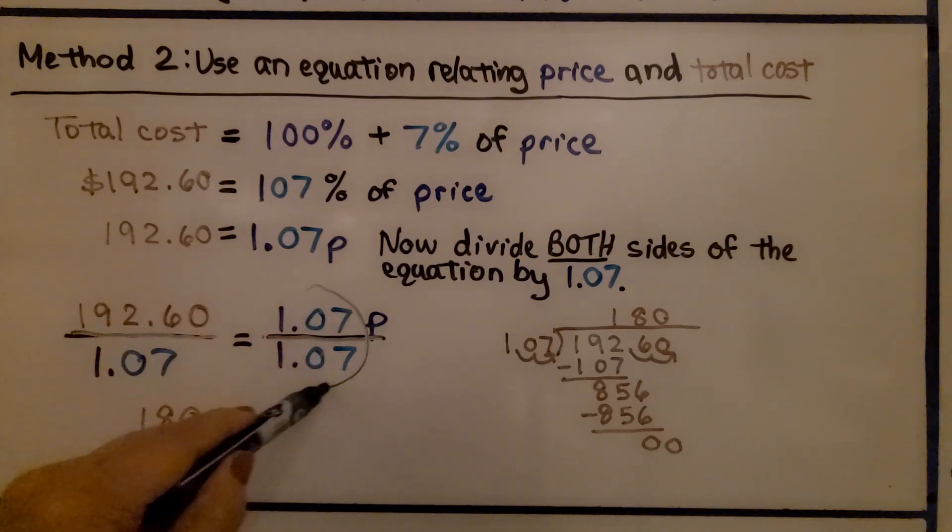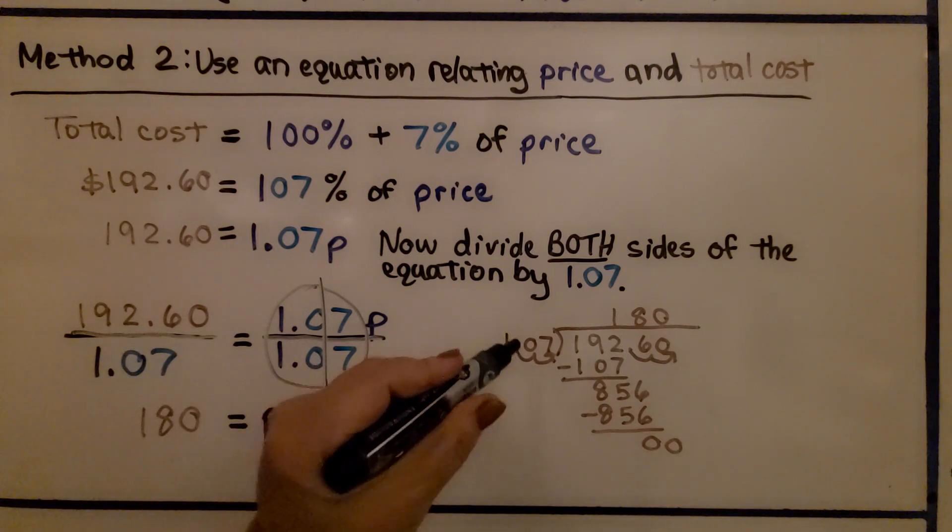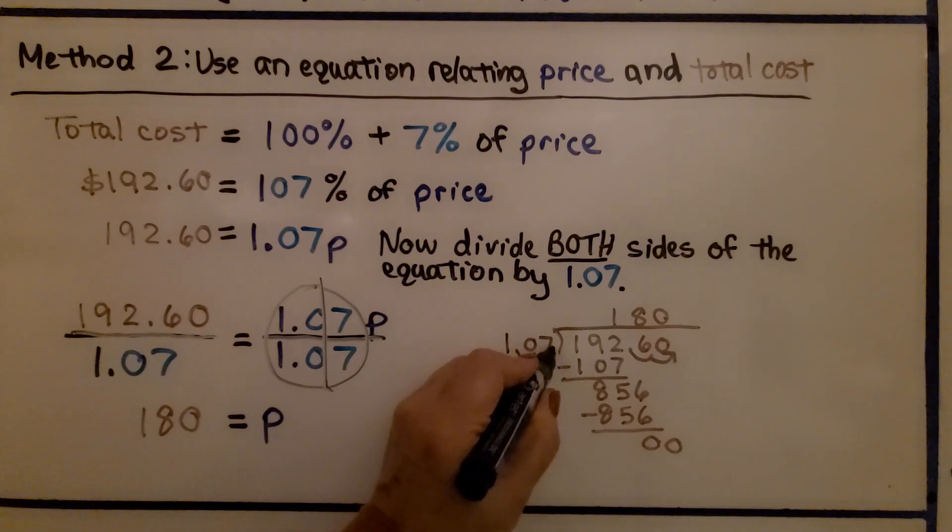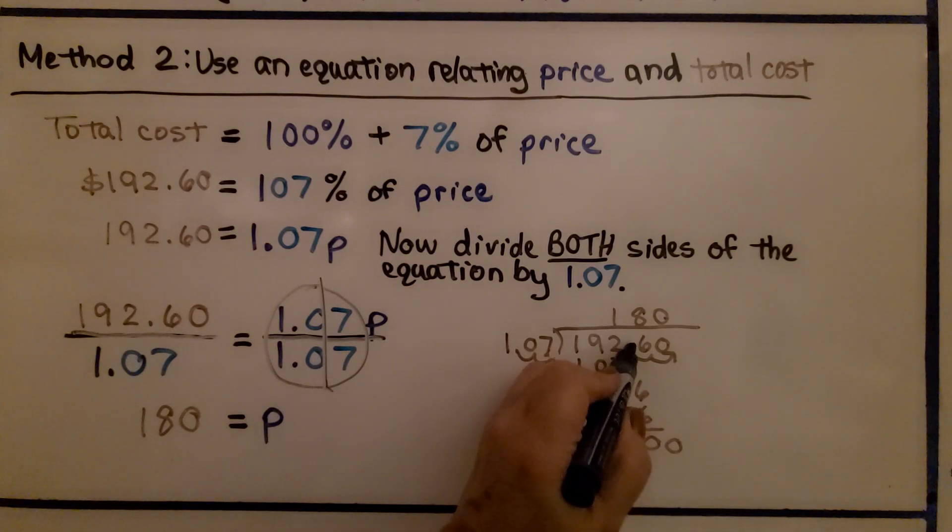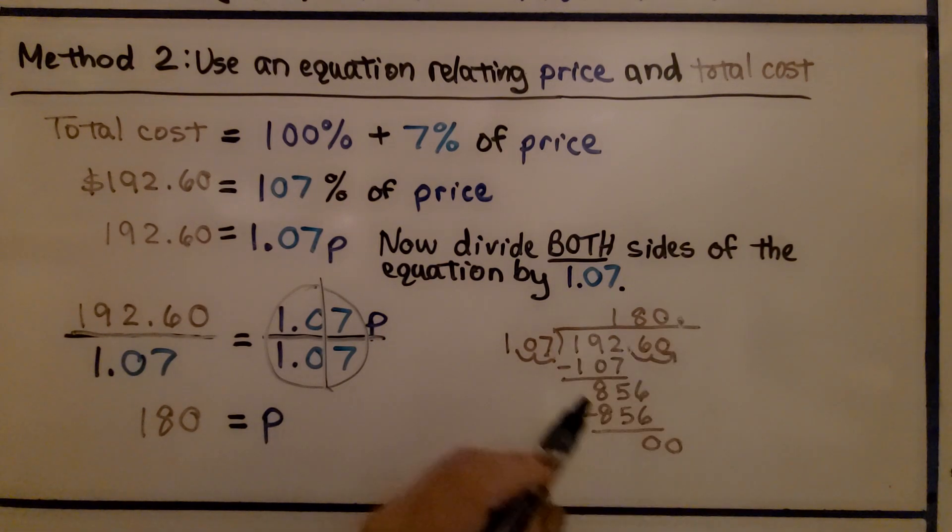When we do it on this side, we have the same numerator and denominator. It makes a 1, a 1p, but we don't have to write that 1. On this side, $192 and 60 cents divided by 1.07. We move that decimal point over in the 1.07 to back here. That means we have to move this decimal point over two spaces. So the decimal point is going to be back here. And we get 180 is equal to P, which means the sewing machine is $180.